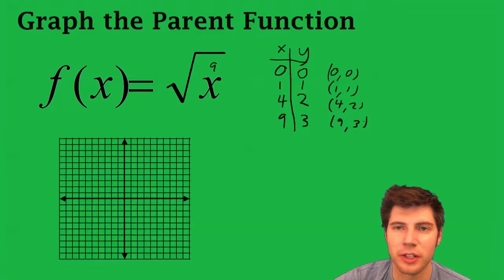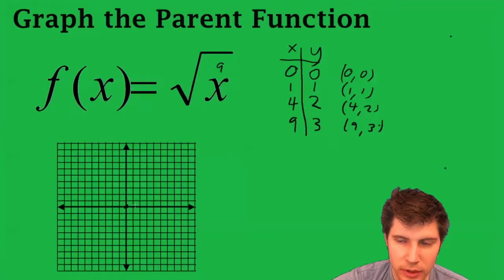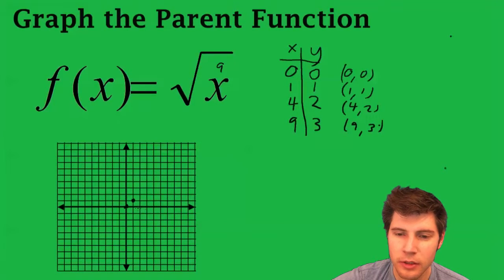So we just plot these points and get an idea of what the graph looks like. So (0, 0) is right there. (1, 1) is right here. (4, 2) is right there. And (9, 3) is right there.